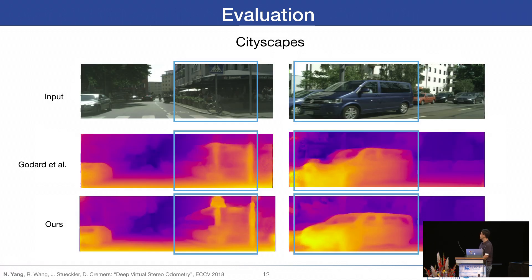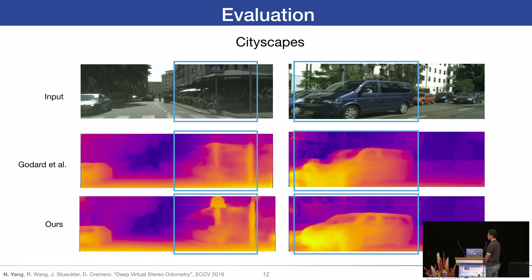To show the generalization capability, we also run our StackNet on the CityScapes dataset, even though the model was trained only on the KITTI dataset. You can clearly see that our network can predict plausible depth maps and still recover the shape of objects — for example, the poles on the left image and the car on the right image.